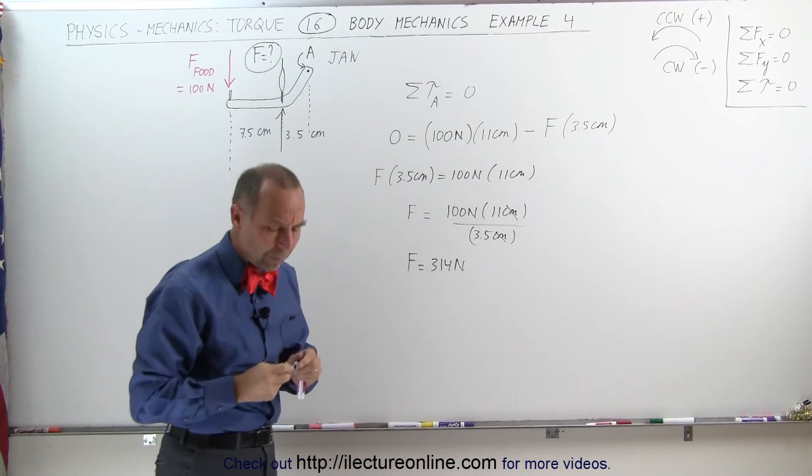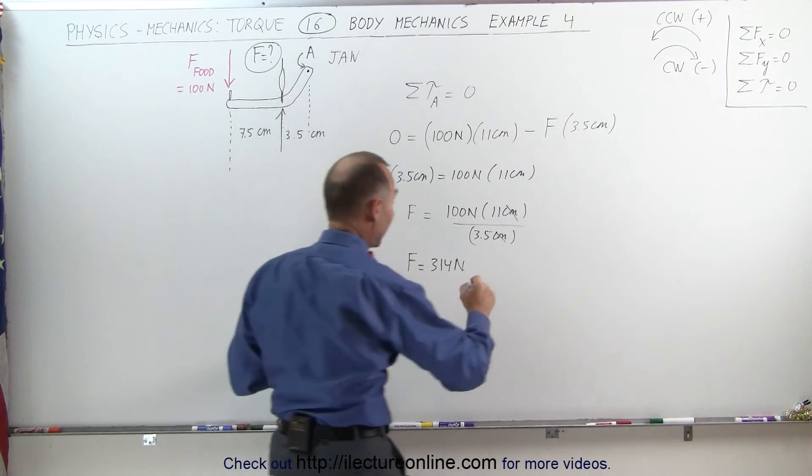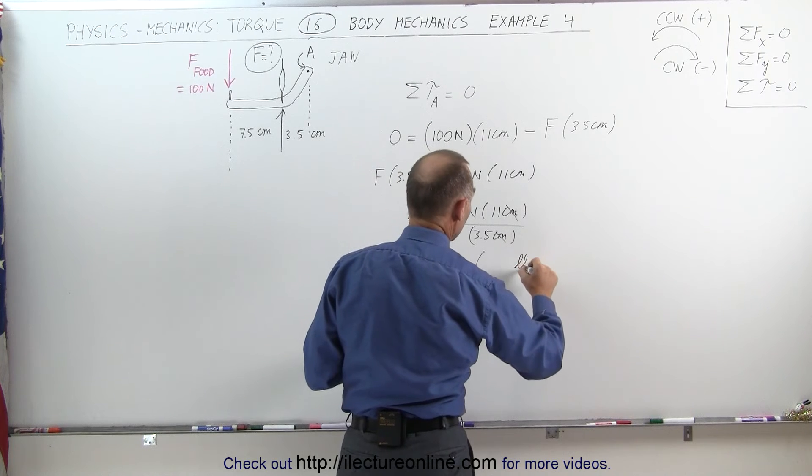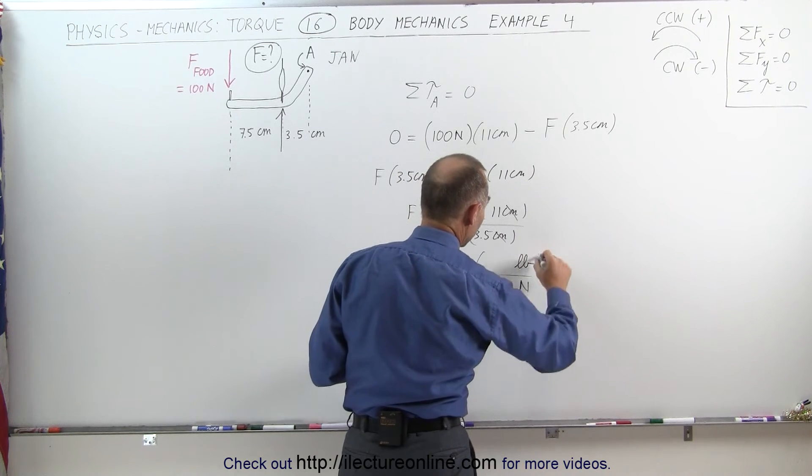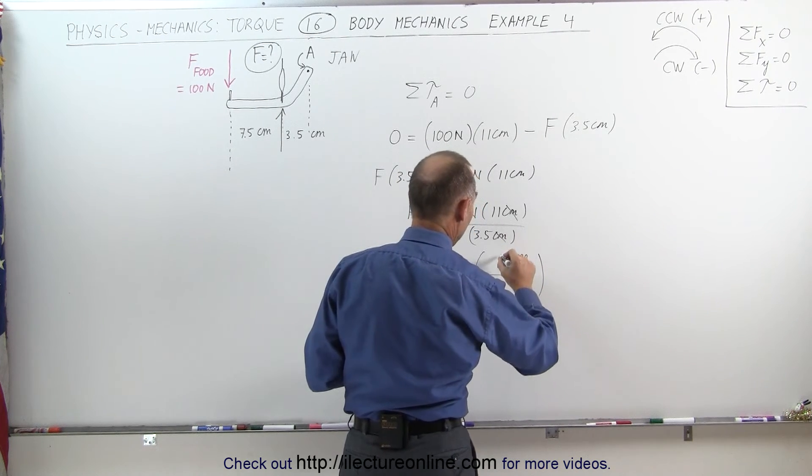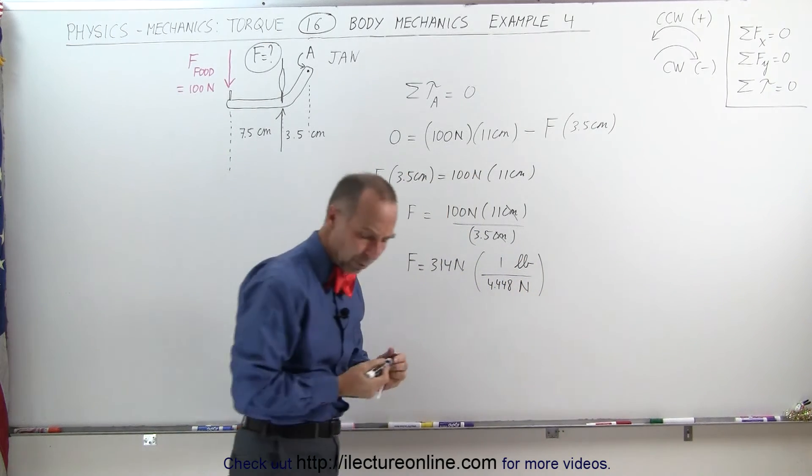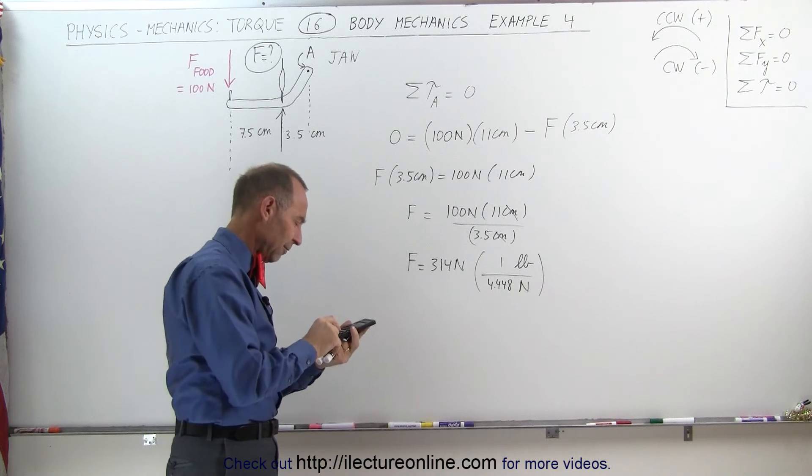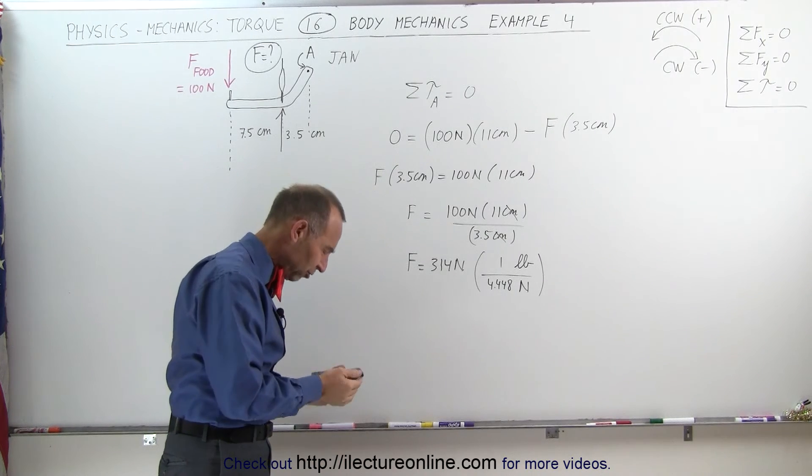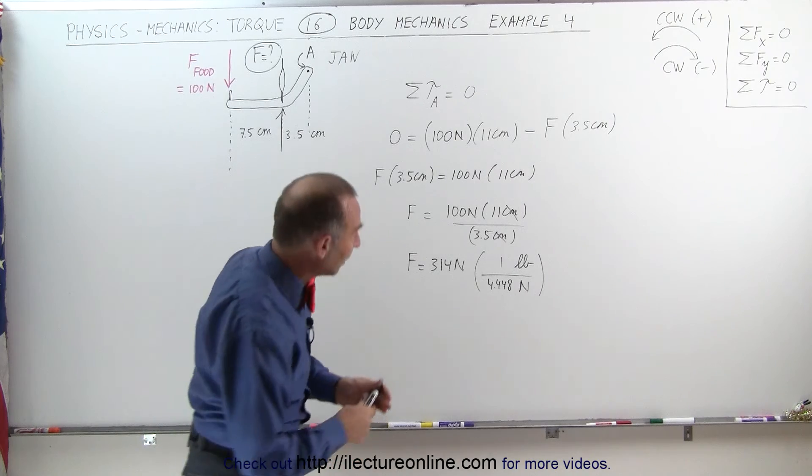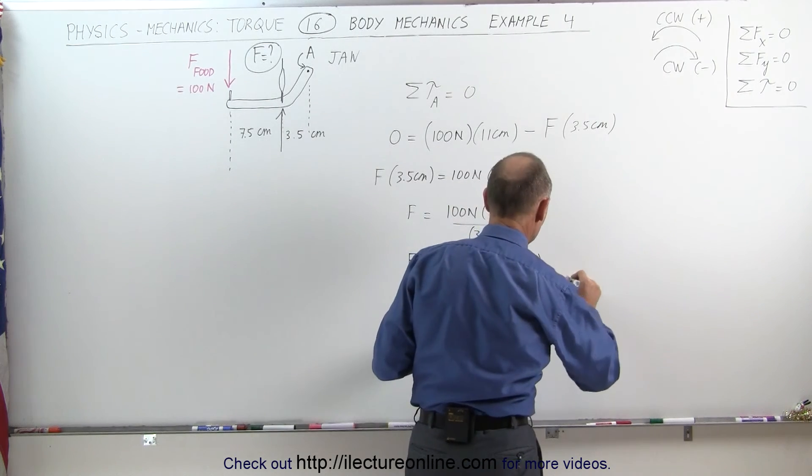If you want to convert that to pounds, we can do a conversion factor here. It would be pounds in the numerator and newtons in the denominator. One pound is 4.448 newtons. So when you divide by 4.448, we have a strength of almost 71 pounds of strength in that muscle.